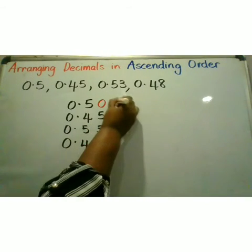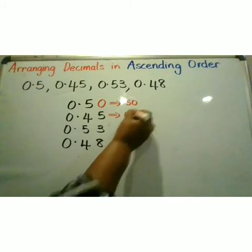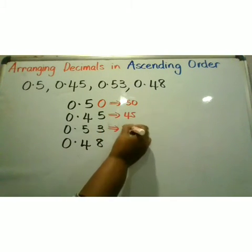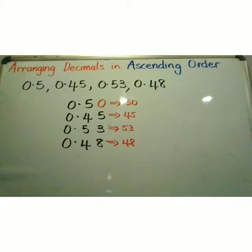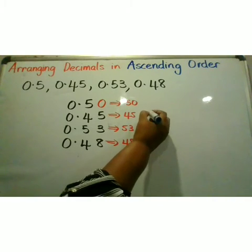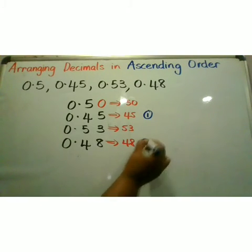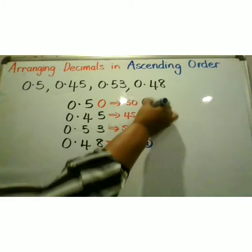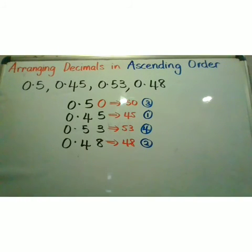Ignoring my decimal point, this becomes 50, this becomes 45, this becomes 53 and this becomes 48. Now I use those numbers to put them in order. First comes 45, then followed by 48, followed by 50 and followed by 53.